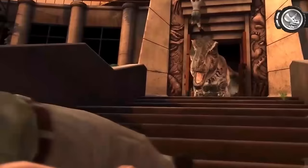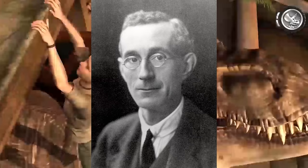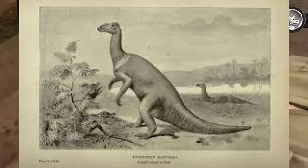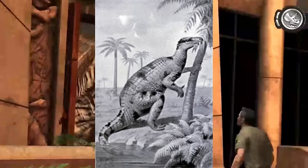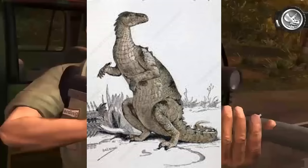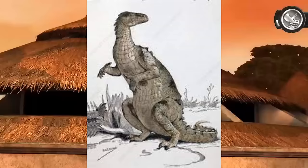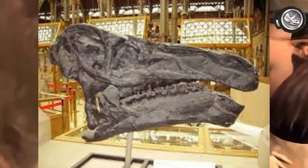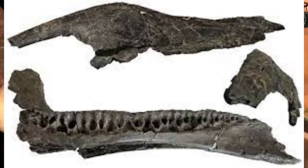Louis Dollo, a prominent Belgian paleontologist, suggested the presence of an opening in the lower jaw of Iguanodon, believing it to be an adaptation for the tongue. He proposed this opening might have accommodated a retractable, chameleon-like tongue that Iguanodon could extend to reach vegetation. However, later scientific investigation revealed that the supposed opening Dollo described was actually an artifact or a crack in the fossil, rather than a natural anatomical feature. Subsequent studies demonstrated that Dollo's interpretation regarding the tongue hole was incorrect, though his idea had already been incorporated into several textbooks and scientific illustrations before being corrected.